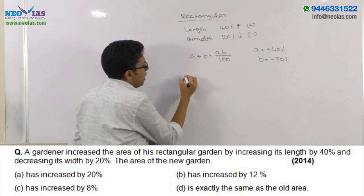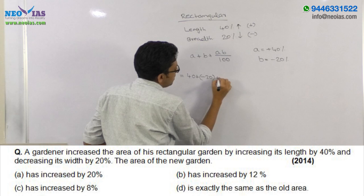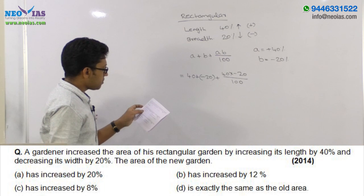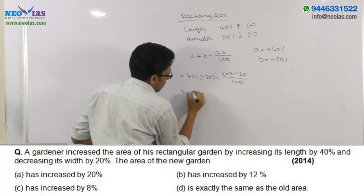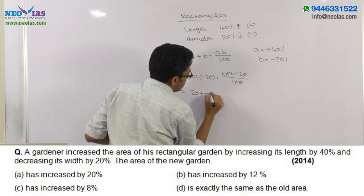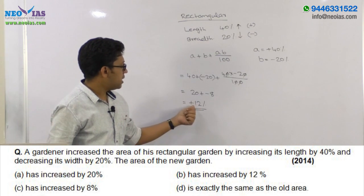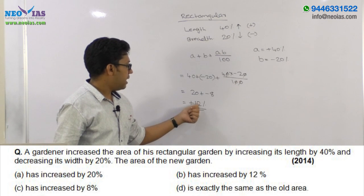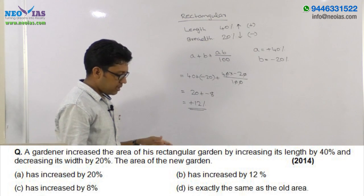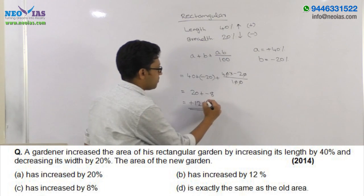Applying the formula: 40 plus (minus 20) plus (40 into minus 20) divided by 100. This gives us 40 minus 20 minus 8, which equals plus 12%. The plus indicates that the area of this rectangular garden has increased by 12%. So option B will be your answer: the area of the new garden has increased by 12%.